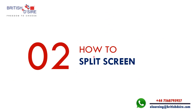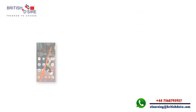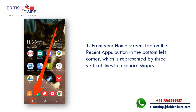Point 2: How to split screen? Step 1: From your home screen, tap on the recent apps button in the bottom left corner, which is represented by three vertical lines in a square shape.